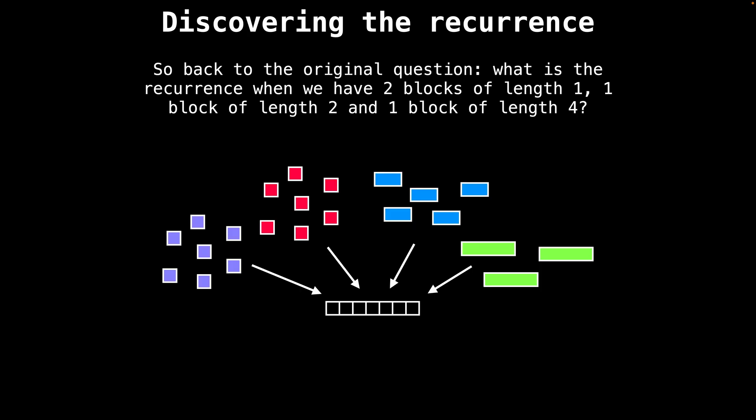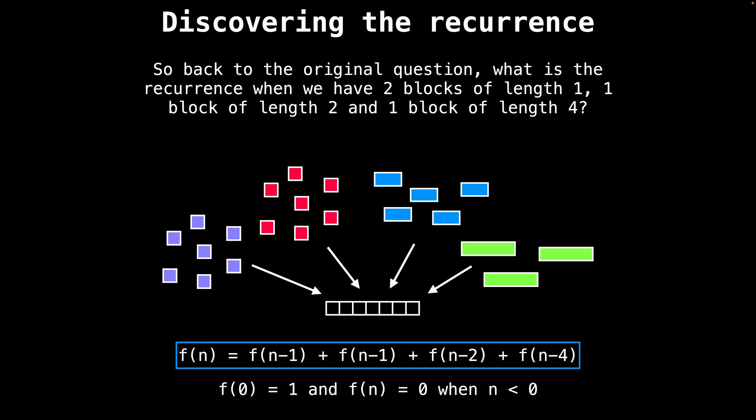Coming back to our original question, what is the recurrence when we have two blocks of length one, one block of length two, and one block of length four? Well, in this case, the recurrence is f(n) = f(n-1) for the red block, plus f(n-1) for the purple block plus f(n-2) for the blue block plus f(n-4) for the green block. Since f(n-1) is repeated, we can further simplify the recurrence by combining the f(n-1) terms.